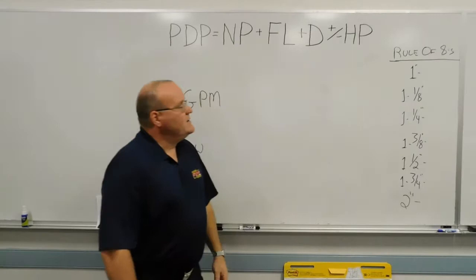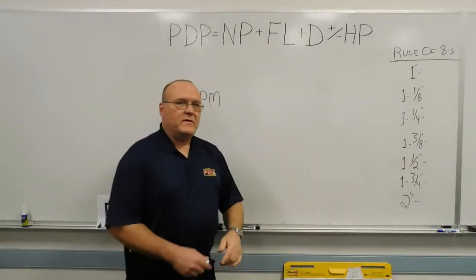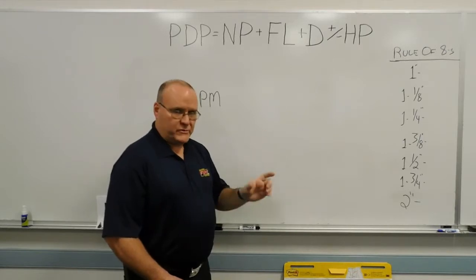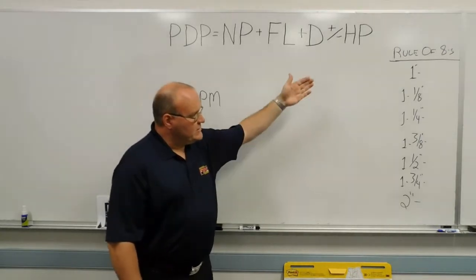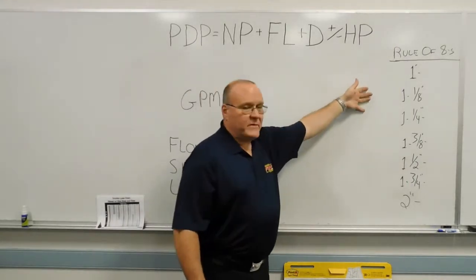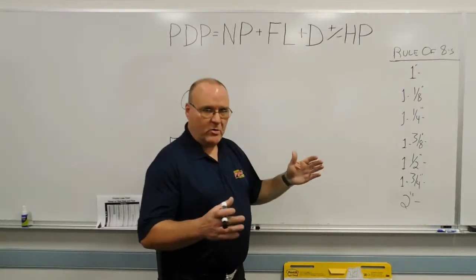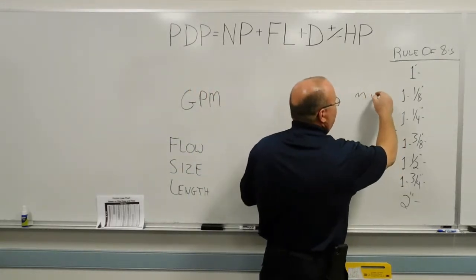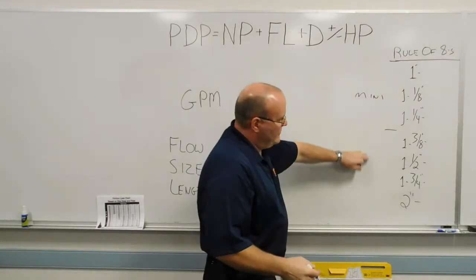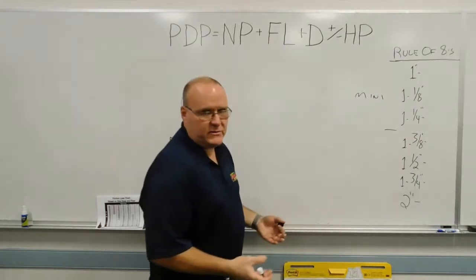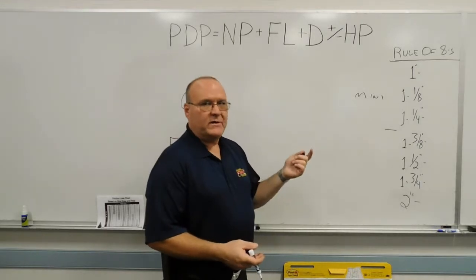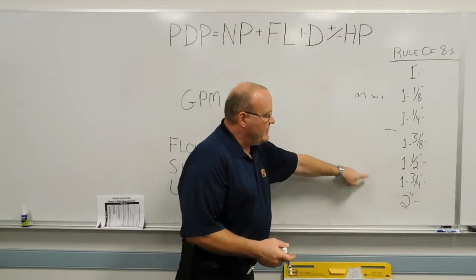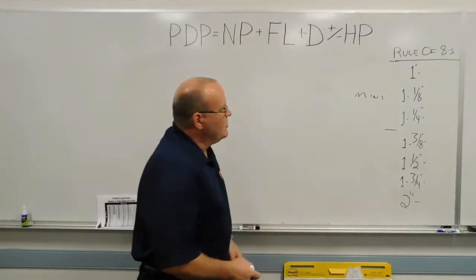Another method that we'll talk about is the rule of eights method. And this is using your solid stream master streams that you have. In Salisbury, these are the tip sizes we have. The top three are on our portable small monitor, our mini monitor. And they are one inch, inch and one-eighth, and inch and a quarter. And then the other four are on our deck guns on our engines and the solid stream nozzles on the master streams on the ladder pipe. So inch and three-eighths, inch and a half, inch and three-quarter, and two-inch. And the rule of eights, what we do is we take that tip size and then the fraction part of it, we make it eights.